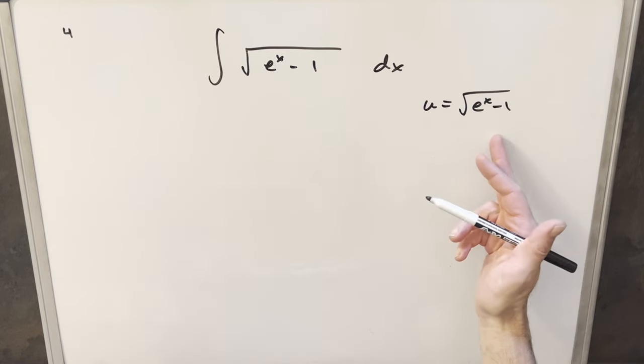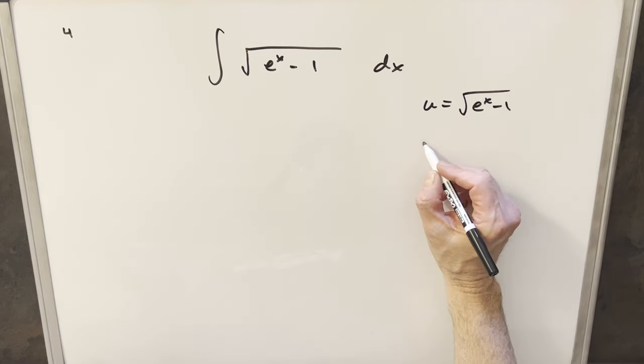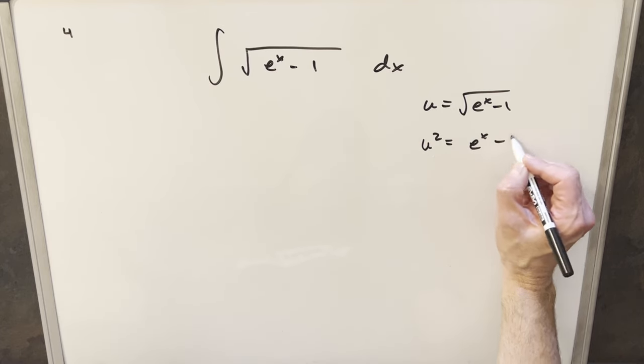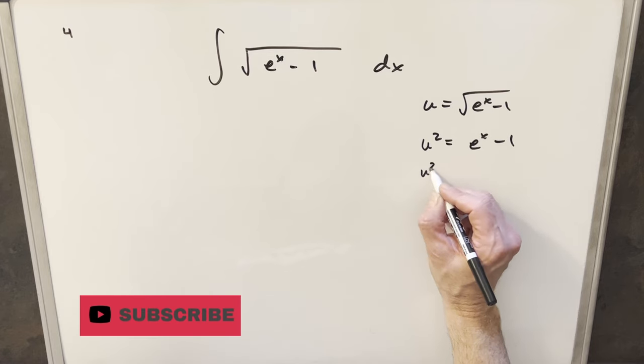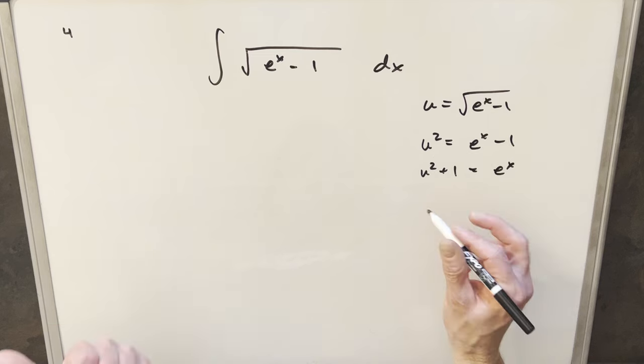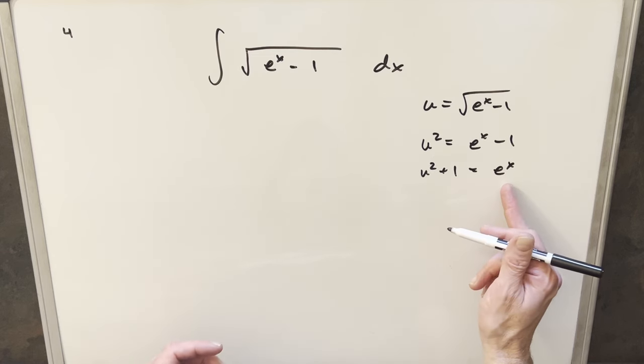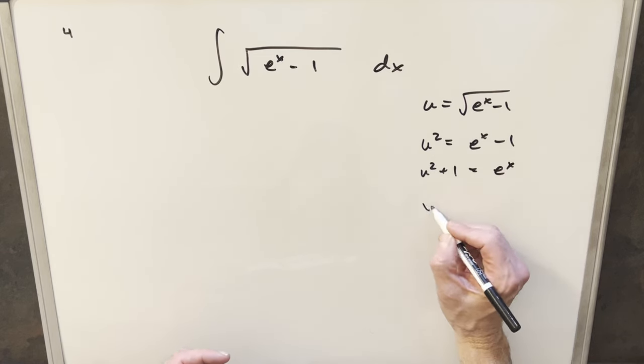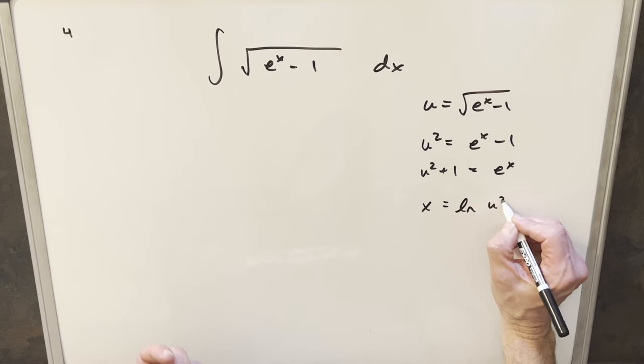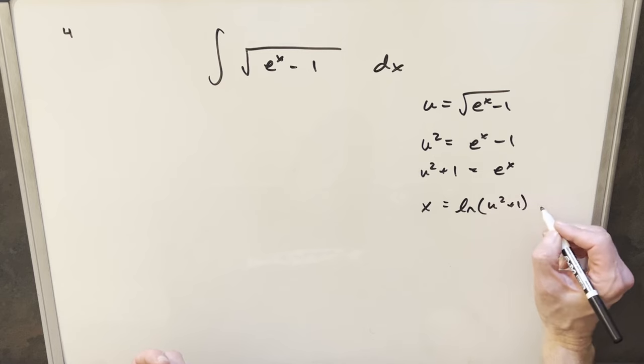And then from here, what I want to do is actually solve for x. So we'll square both sides, and we'll have u squared is e to the x minus one. Then we can get the one over here on this side and write it as u squared plus one equals e to the x. Take natural log on both sides. When we take natural log of e to the x, we're just going to have x on one side. And then here we're going to get natural log u squared plus one.